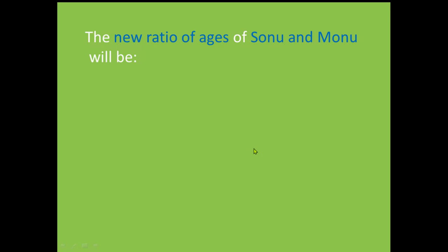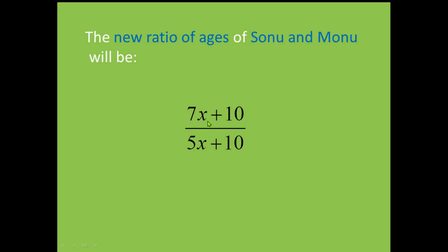So after 10 years, we will have a new ratio of the ages of Sonu and Monu. And what will be that ratio? The ratio will be 7X plus 10 divided by 5X plus 10. So this will be the new ratio after 10 years.